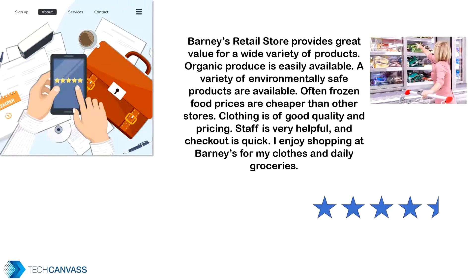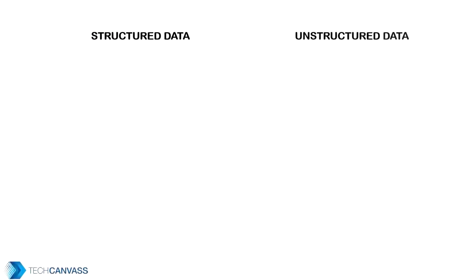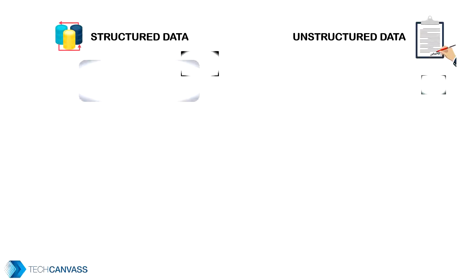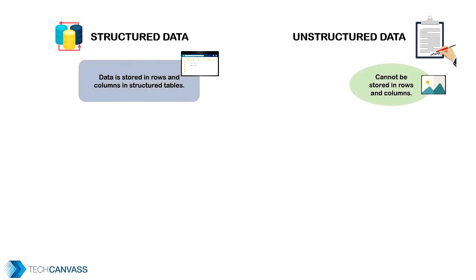Let us look at the differences between structured and unstructured data. Storing structured data is pretty straightforward — in well-defined rows and columns in tables. Because of the variety and ambiguity of format, unstructured data cannot be forced to fit into tables. It is stored in specialized databases.